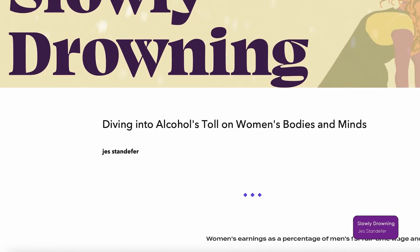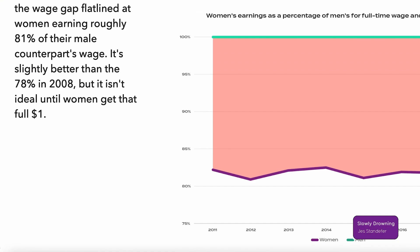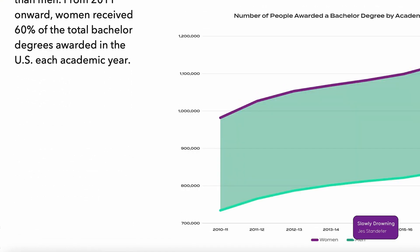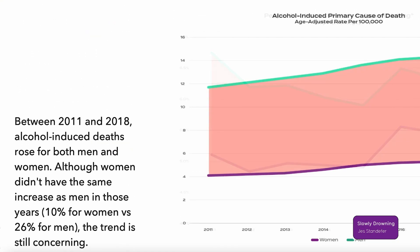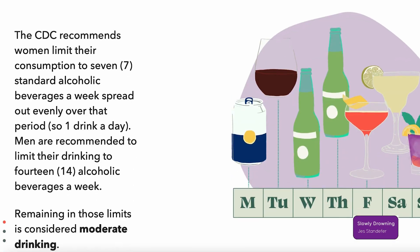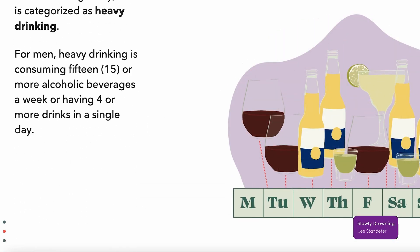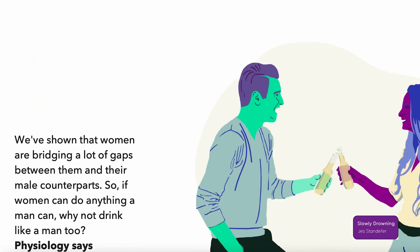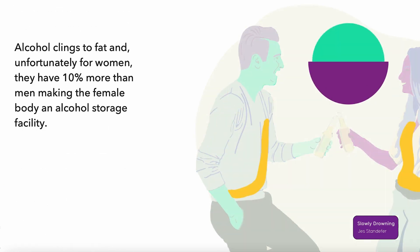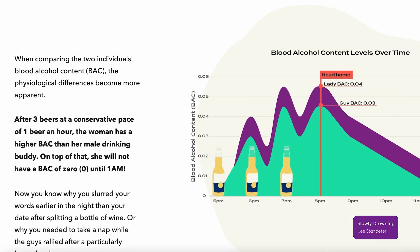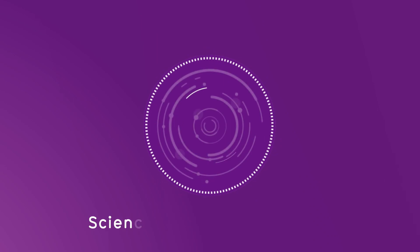Slowly Drowning by Jess Standever. Through a series of visualizations, Slowly Drowning explores the increase in drinking amongst American women, as well as the physical and mental toll drinking causes. The goal is to provide the viewer with a better understanding of what problematic drinking is, how prolonged alcohol consumption has irreversible and fatal consequences, and what steps could be taken to prevent long-term damage.